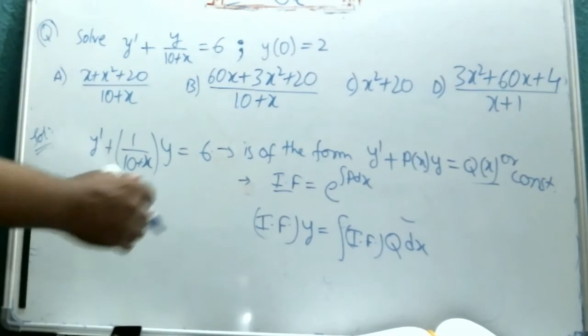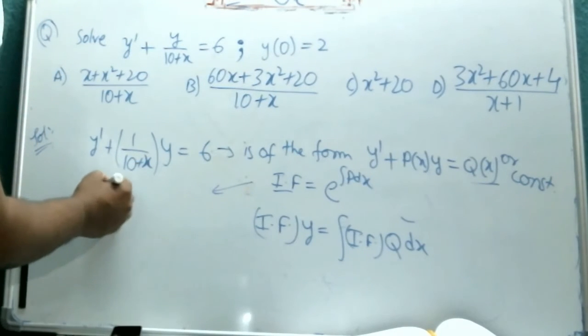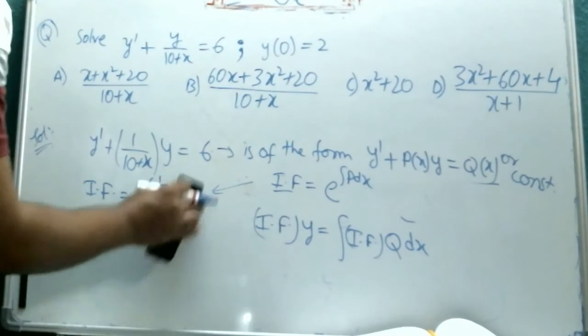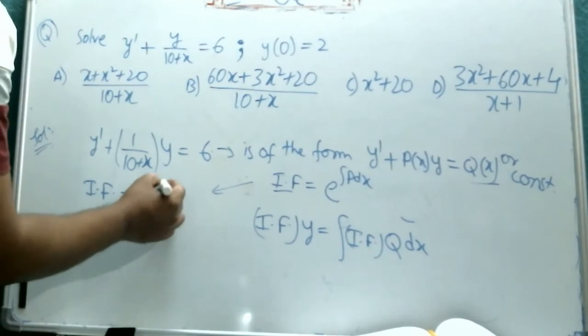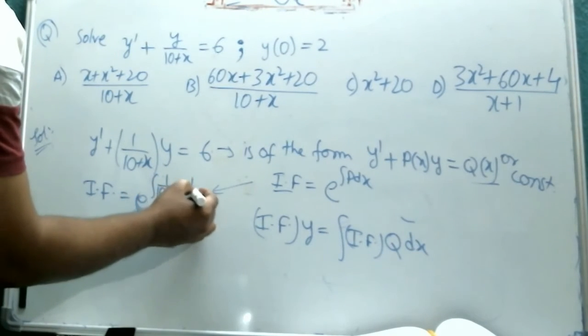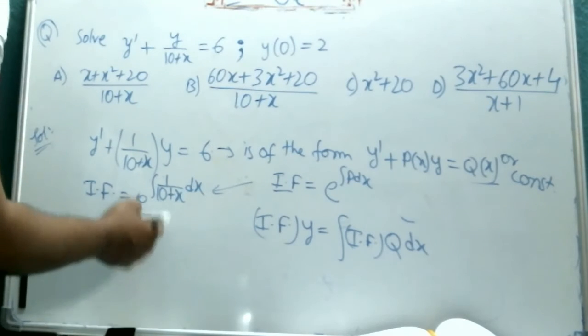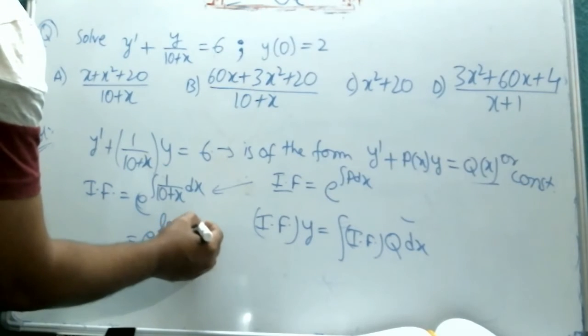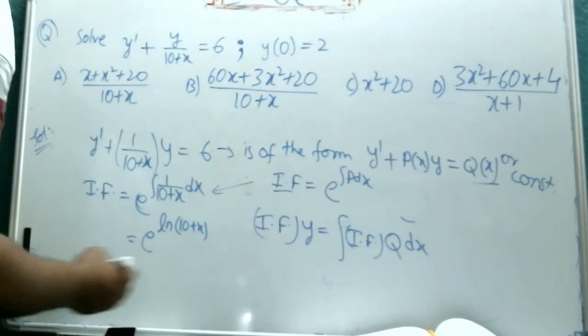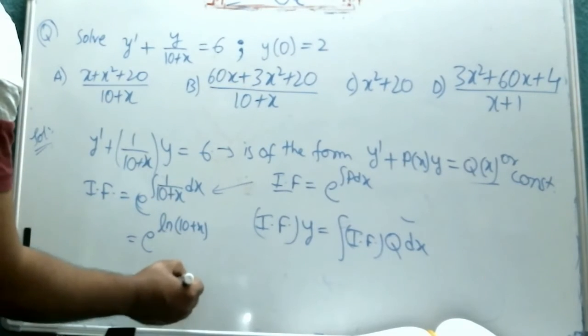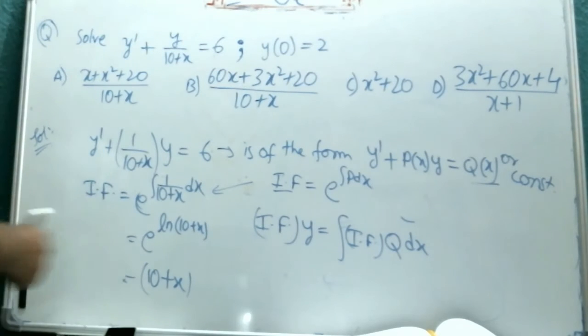In step 1, we get integration factor as e power integral p is 1 by 10 plus x dx. I will write it in a bit clearer way: e power integral 1 by 10 plus x dx. Now, when we integrate it, we get it as e power log of 10 plus x. When we have e power log of 10 plus x to the base e, the final answer will be 10 plus x only. This is the integration factor we get.